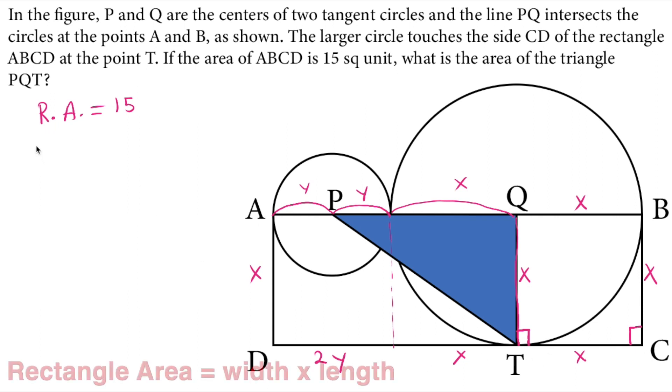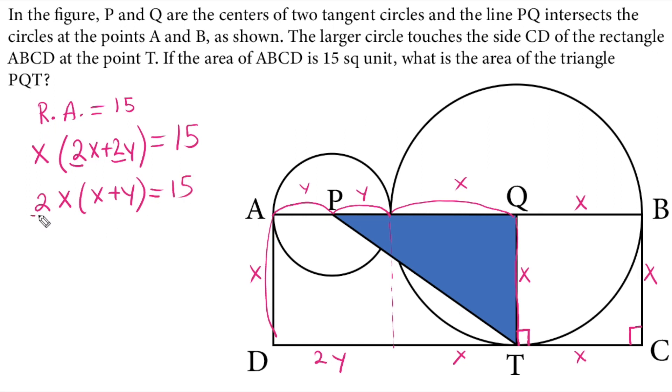So 15 must equal x as the short side length, the width of the rectangle, and 2y plus 2x as the length of the rectangle. So this is good information. I can simplify this by getting 2 as a common factor outside of the parentheses. So 2 times (x + y) times x equals 15, and I can divide both sides by 2. I will find x times (x + y) equals 15 over 2. This is important information.